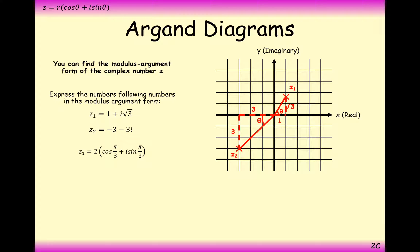So the next one is find the modulus argument form of minus 3 minus 3i. So all we need to do for that is look at the distance from the origin to the complex number. That's our modulus, root 18, or 3 root 2.